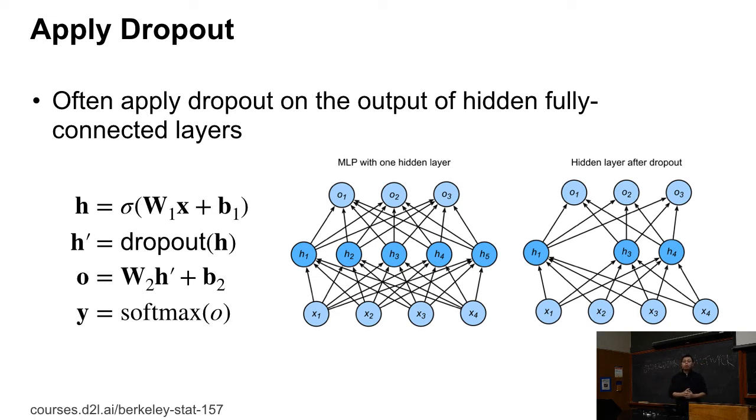Then, dropout is - every time we train, every time we run a forward pass, we actually apply dropout, which means every time the ones you dropout are different. You don't do the dropout at first and fix all the things, so that you permanently lose H2 and H5. Every time we drop different nodes.